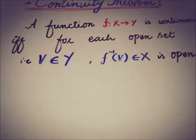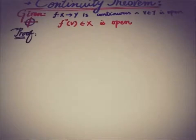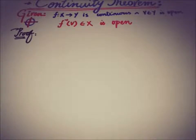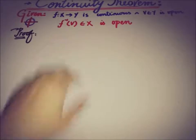So let's start. In the first part, what we are given is that the function f from X to Y is continuous and V, belonging to Y, is an open set. What we have to prove is that the preimage f⁻¹(V) in X is open.